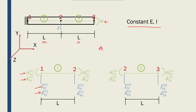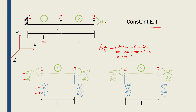When we write phi-1z of element 1 with a hat, it means the rotation of node 1 at element 1 about the z-axis in the local coordinate system. Node 2 is common between elements 1 and 2, so it has two moments, two rotations, two forces, and two displacements.